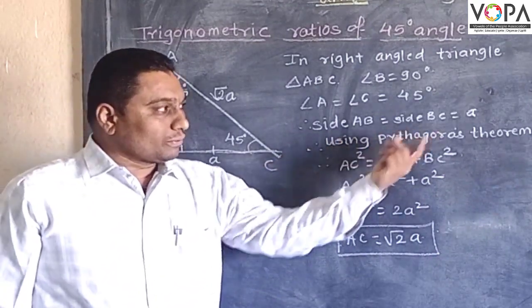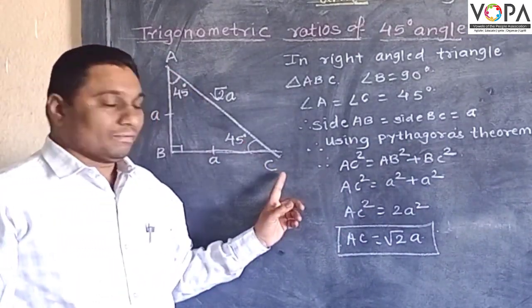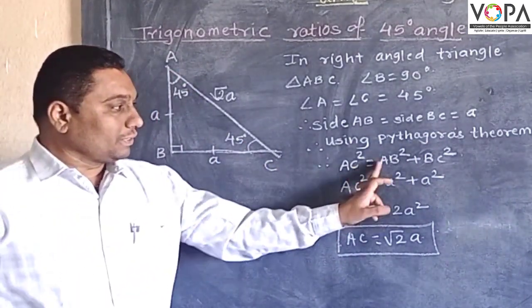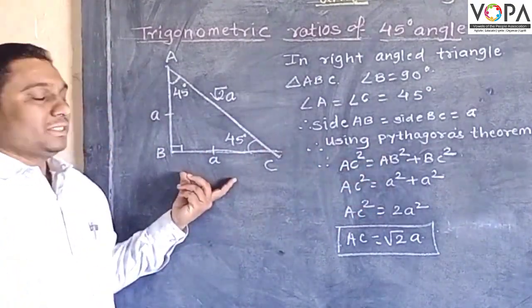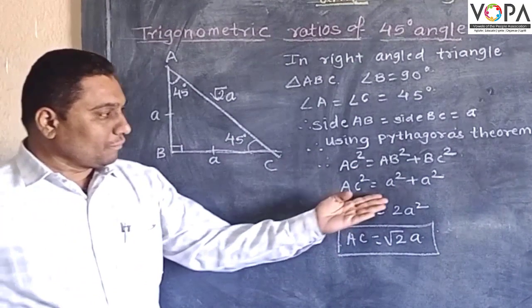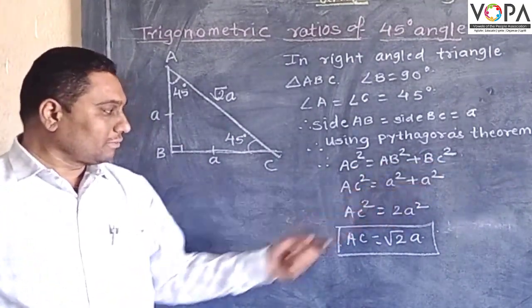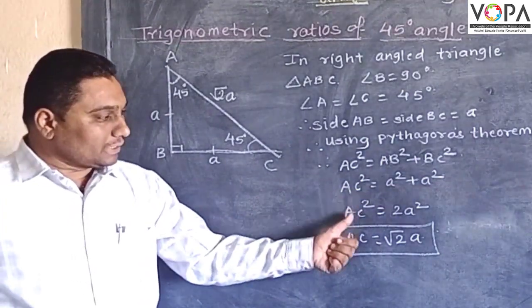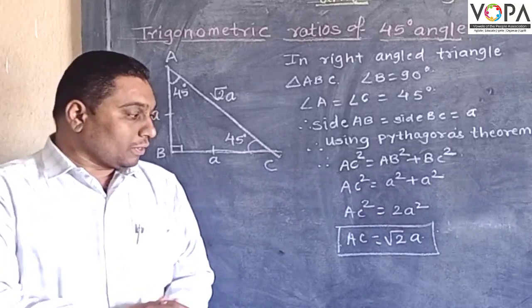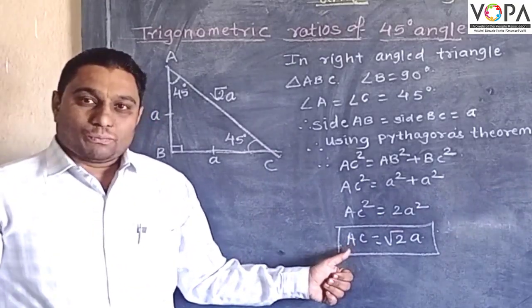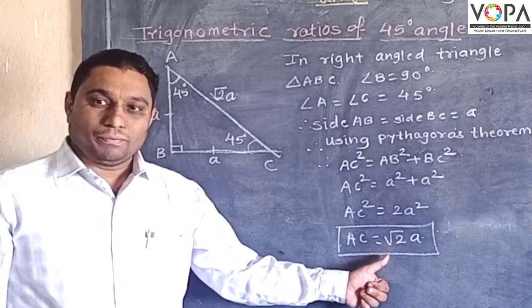Now using Pythagorean theorem for this triangle, AC square is equal to AB square plus BC square. If we put down the values of AB and BC, that is A square plus A square, then AC square is equal to 2A square. Now by taking the square root of these values, AC is equal to square root of 2A.